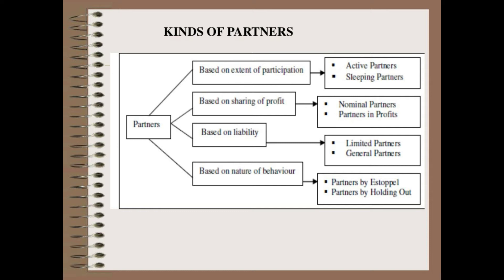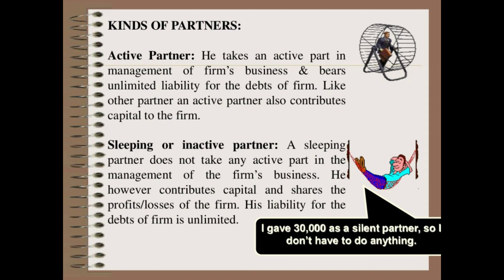Kinds of partners: Partners are classified into four categories based on different criteria. First, based on extent of participation — active partner and sleeping partner. Second, based on sharing of profit — nominal partner and partner in profit. Third, based on liability — limited partner and general partner. Fourth, based on nature of behavior — partner by estoppel and partner by holding out.